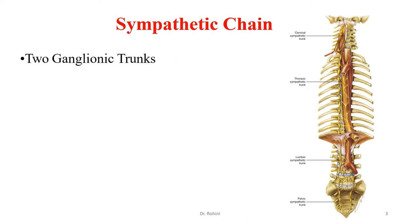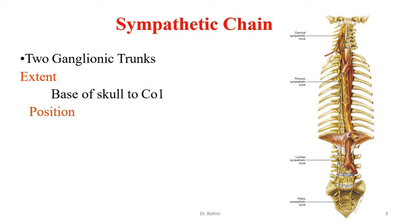The sympathetic chain consists of two ganglionated trunks or chains extending from the base of the skull down to the coccyx, one on each side. It is paravertebral in position — located by the side of the vertebral bodies — and terminates by fusion in front of the coccyx to form the unpaired ganglion impar.